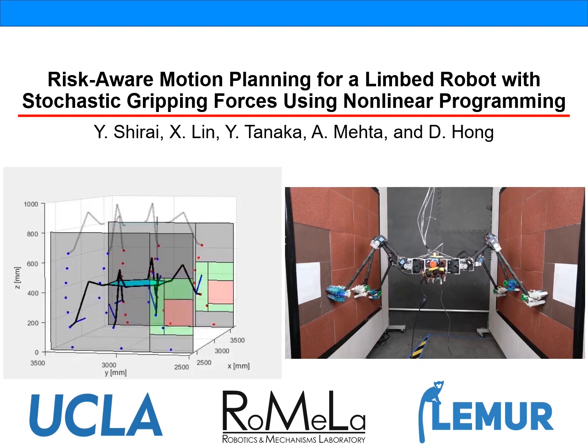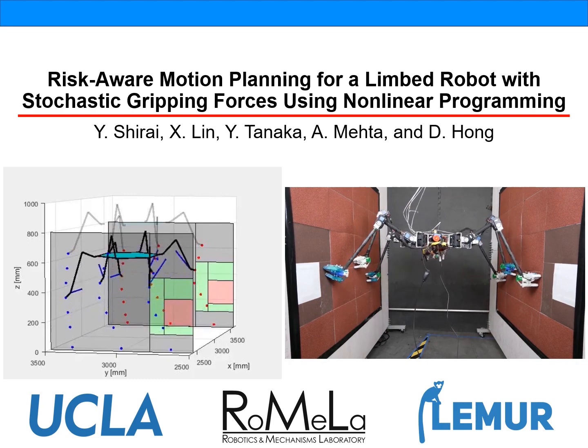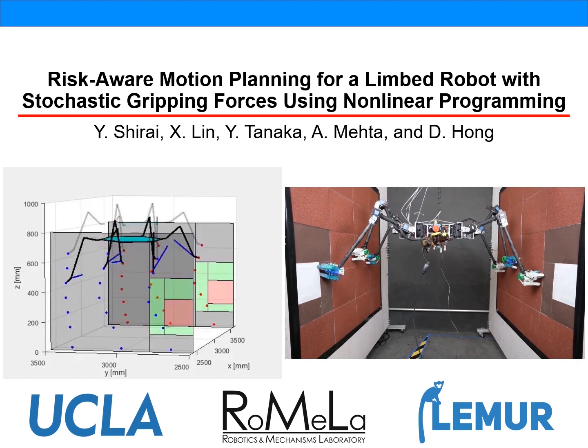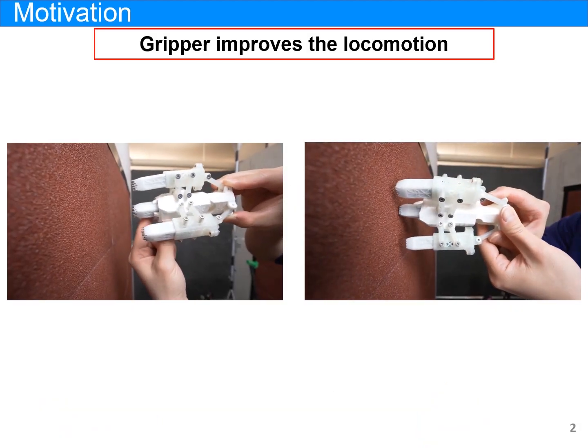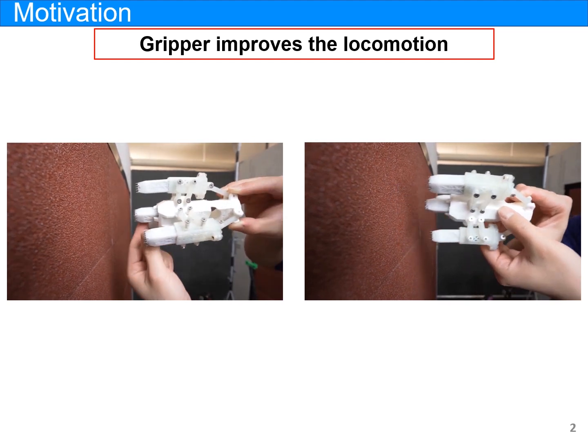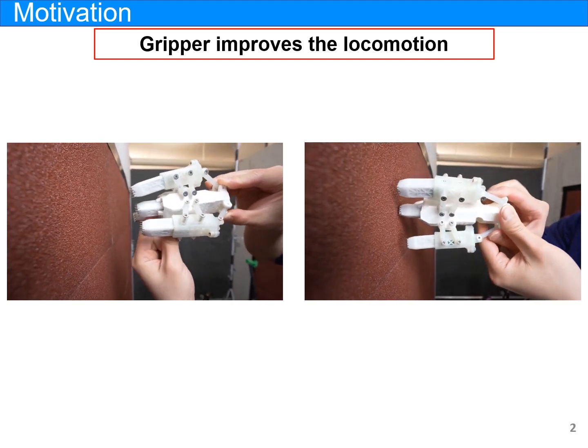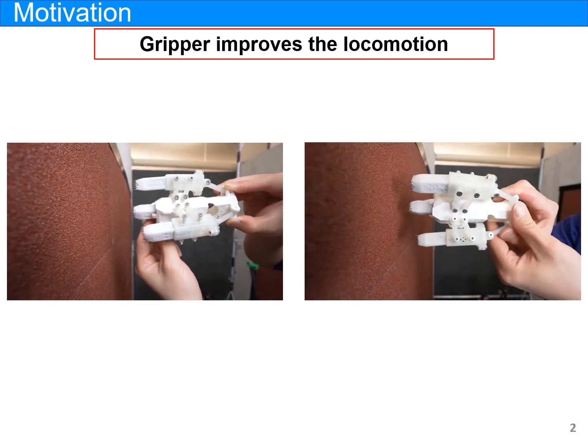In this video, we are going to present a novel motion planning algorithm with probabilistic guarantees for a limbed robot with stochastic gripping forces. In order to realize challenging locomotion such as climbing, installing grippers is one solution. Equipped with grippers, a robot can have more friction forces, resulting in more stable locomotion.